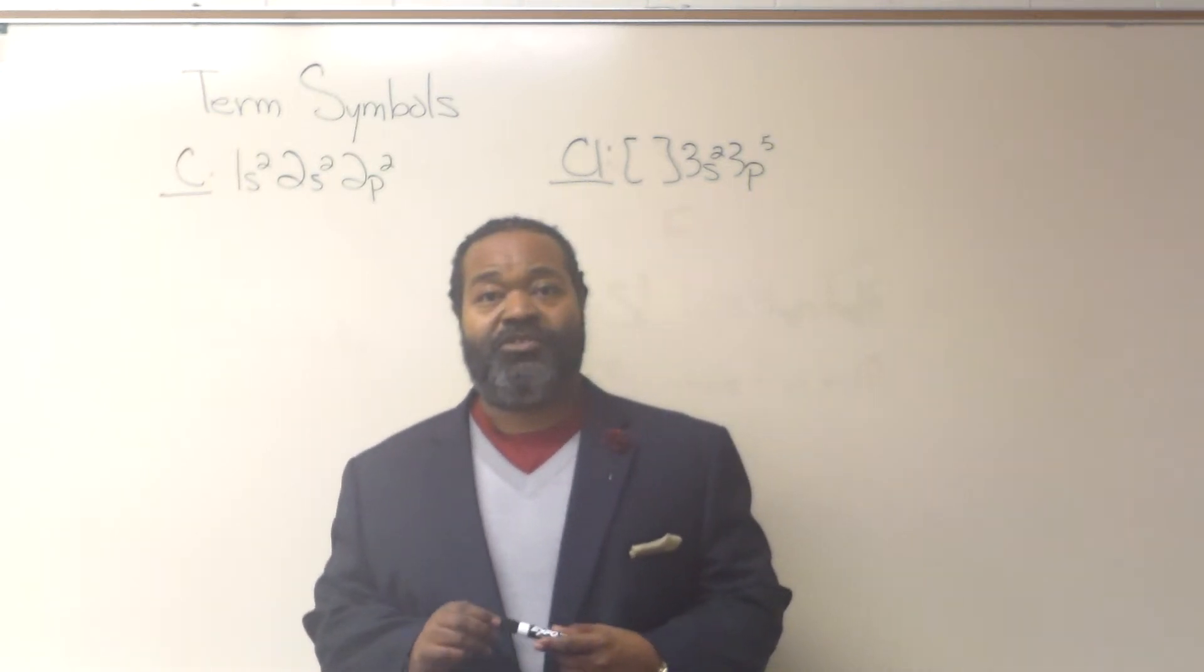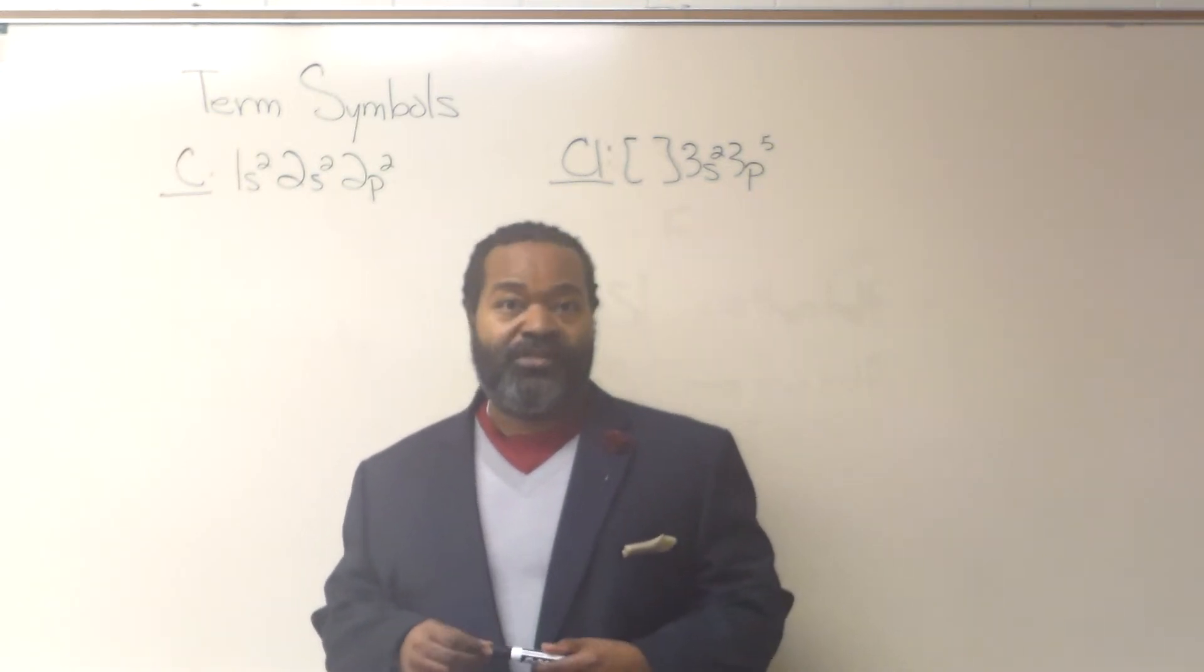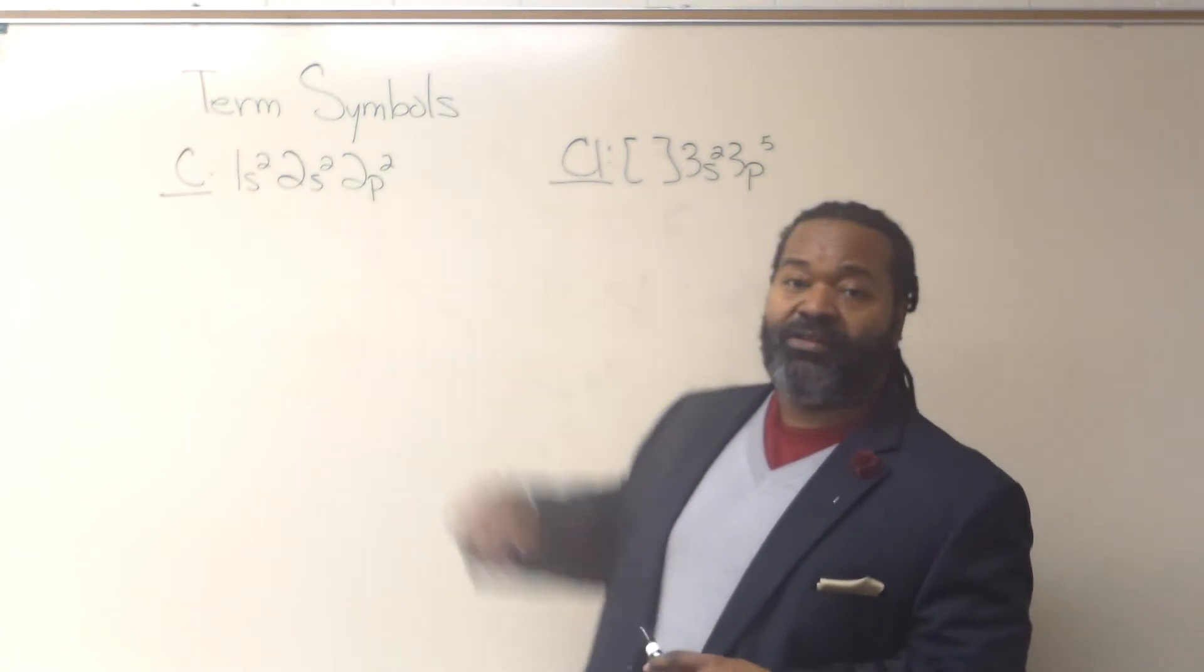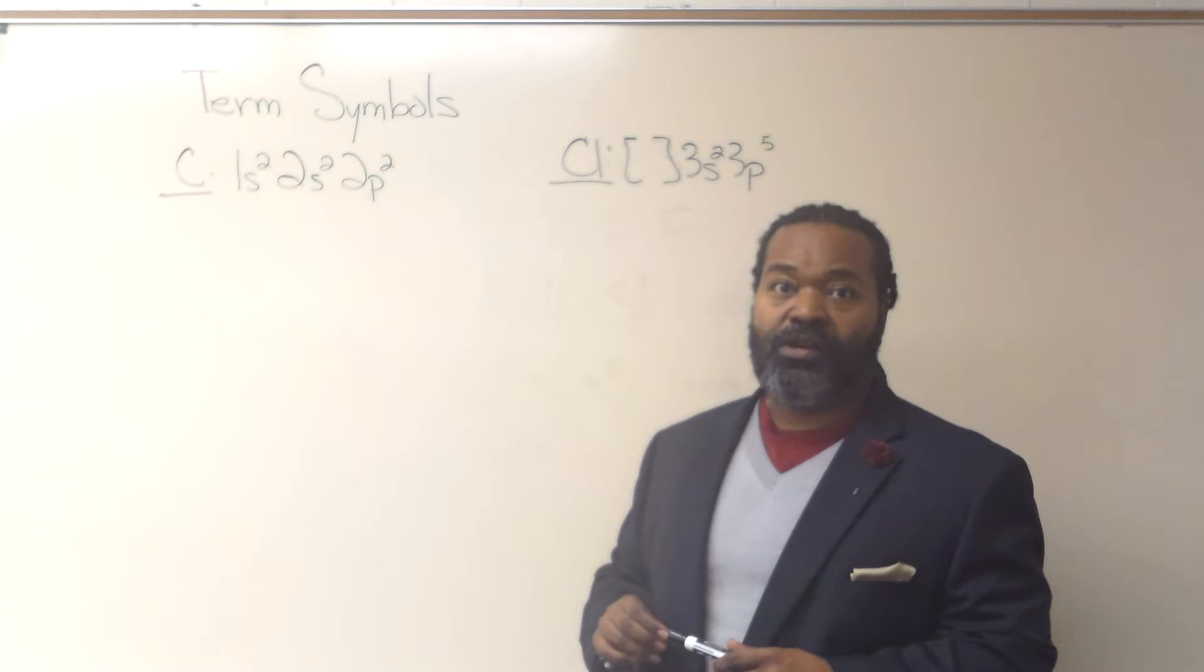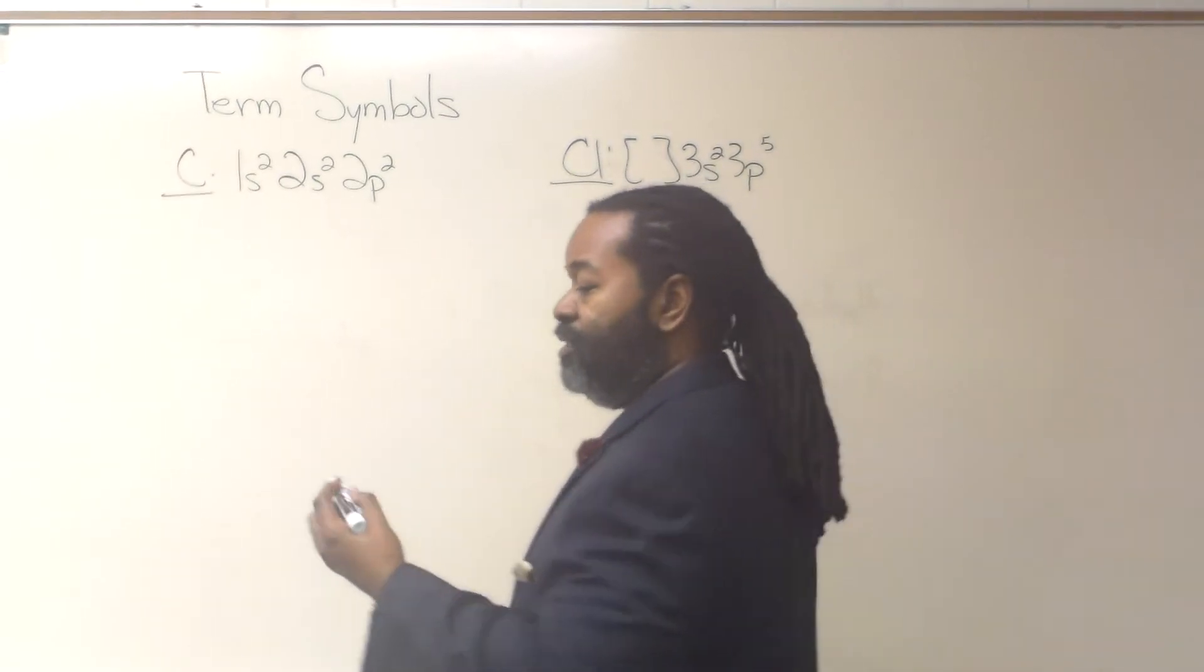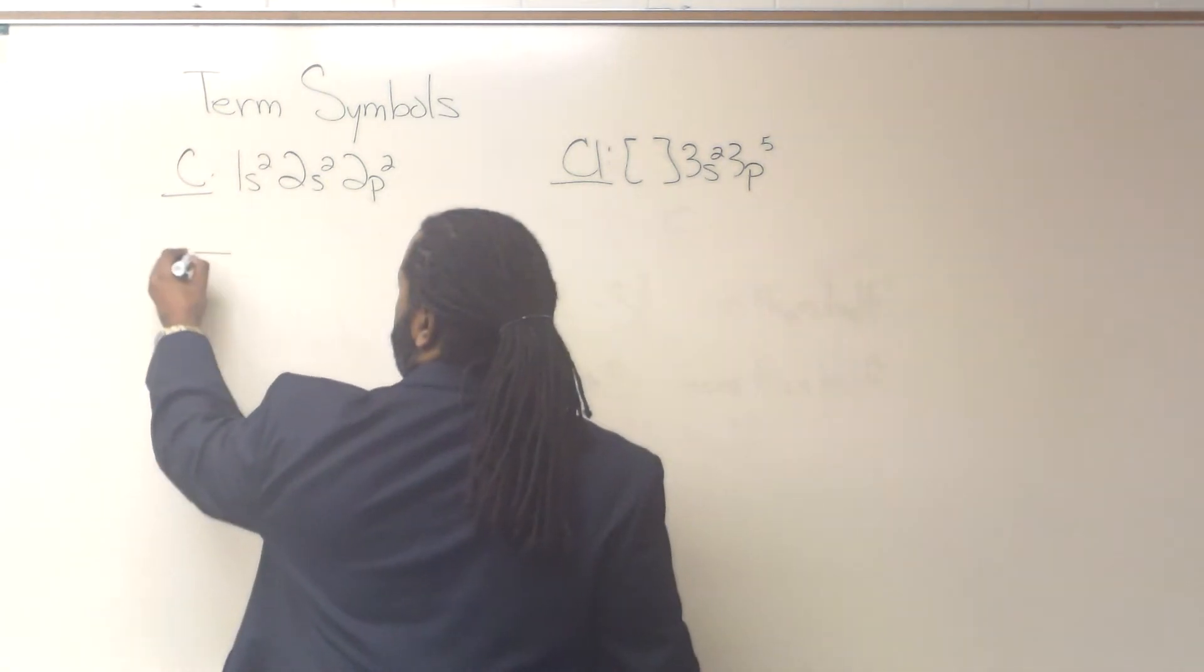This instructional video is designed to show you how to determine the ground state term symbol for a couple of different examples. I already have written out the electron configuration for carbon, so we'll start there. In this case, we're going to write out the orbital diagram.